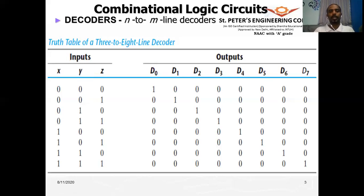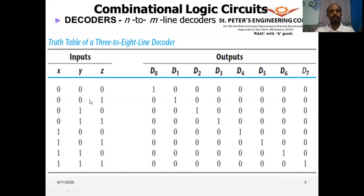Each output is high at only one instant — no two outputs occur simultaneously. If D0 occurs, D1 through D7 don't occur. If D1 occurs, none of the other outputs occur. This is the condition that defines a decoder. The input is decoded. Normally, decoders are used in message transmission where encoding and decoding are needed to transmit and receive messages.